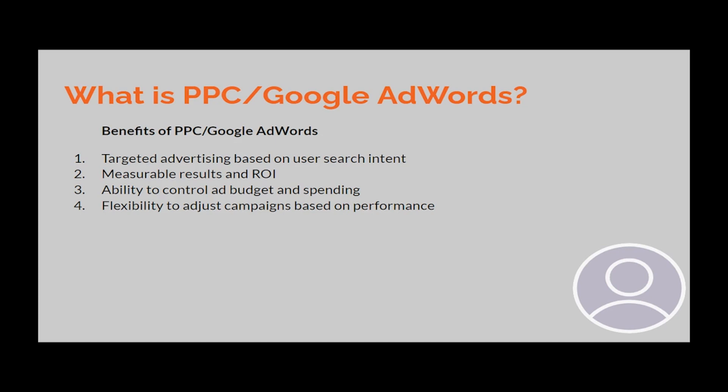The fourth benefit of pay-per-click or Google AdWords is that it is flexible. It gives you the flexibility to adjust your campaigns based on their performance. If a campaign is not performing well, you can optimize or change things to see how better or worse it would perform, giving you full flexibility to adjust based on results.